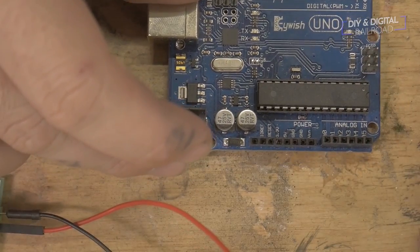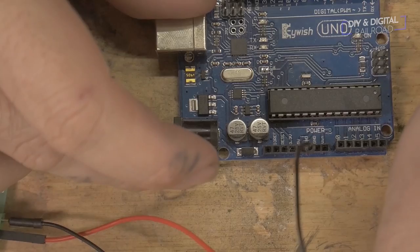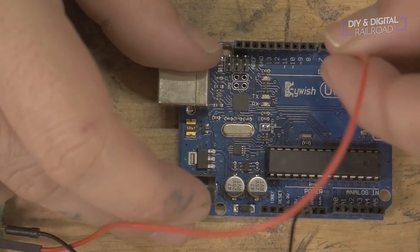Now we need to hook everything up to the Arduino. We of course hook the ground wire, or the black wire in this case, into one of the three ground ports on the Arduino. We then hook our power lead, or red wire, into digital pin 6.